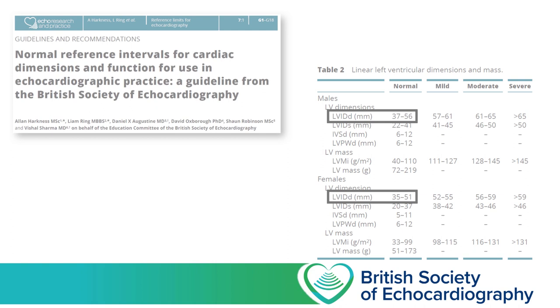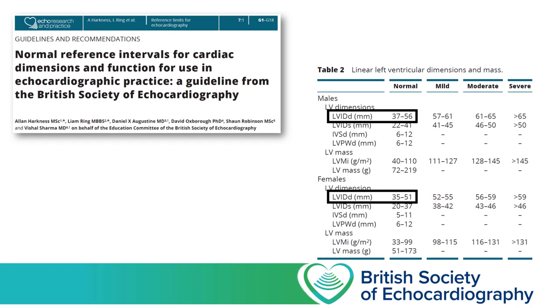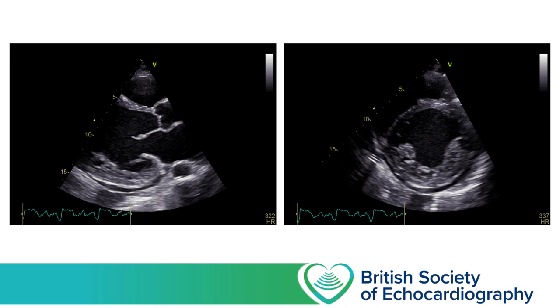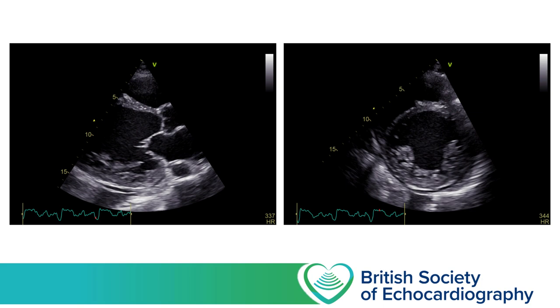Normal ranges vary by gender. For men we allow up to 56mm and for women up to 51mm. The threshold for labelling the LV internal diameter as severely dilated is 65mm for men and 59mm for women. Using a single one-dimensional measurement and extrapolating to describe the entire LV cavity means that if that measurement isn't representative of the LV as a whole, there may be significant dilatation even if the cavity diameter doesn't seem particularly abnormal.